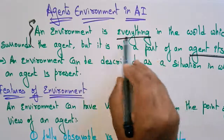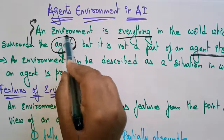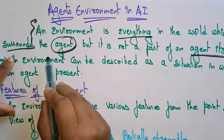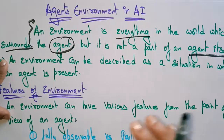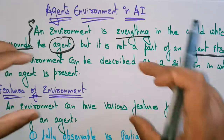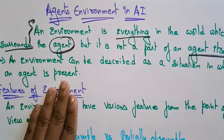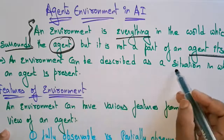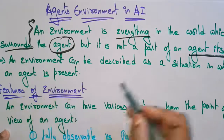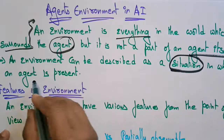Environment is everything in the world which surrounds the agent, but it is not part of the agent itself — it surrounds the agent. Suppose here I am writing everything. This you call as an agent, so outside this, whatever I am able to see, that is an environment. An environment can be described as a situation in which an agent is present.